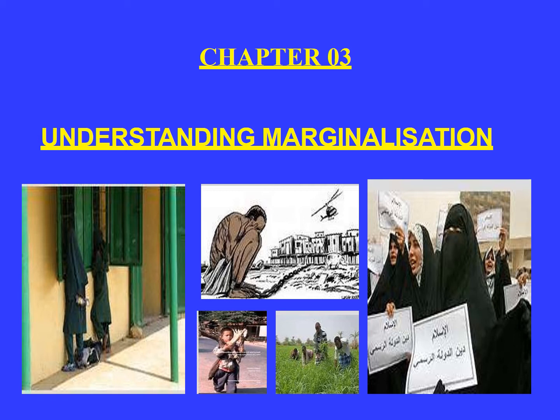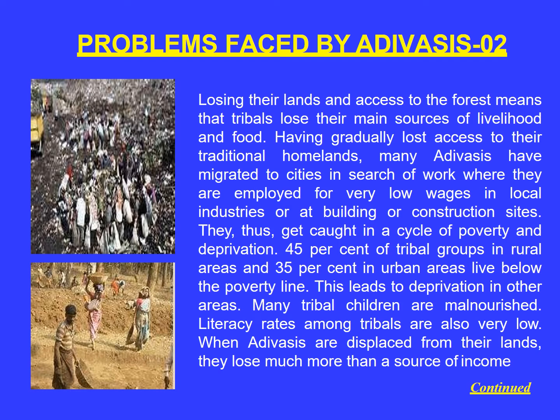In this module we will talk a little about the problems they faced, and then we'll finish this chapter. The problems began when they lost their land or access to the forest — their source of livelihood was lost. They had to move to towns and worked in building and construction sites. Slowly they got stuck in the cycle of poverty. 45 percent of tribal groups in rural areas and 35 percent in urban areas live below the poverty line.